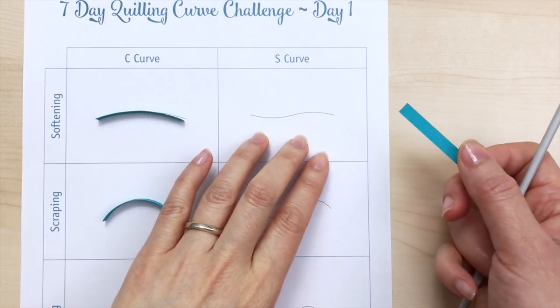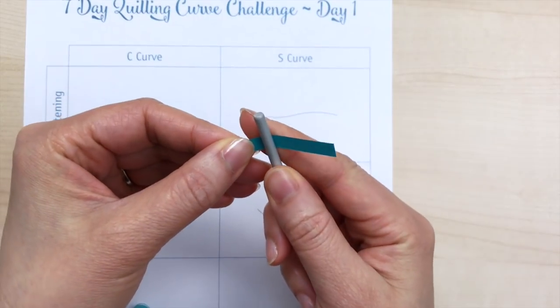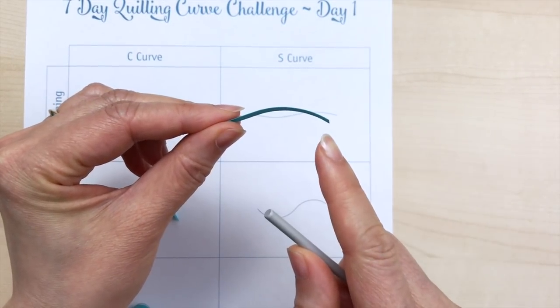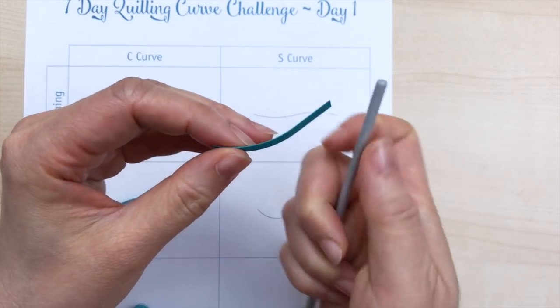Now for the S curve. Similar to the C curve, but you'll see after I've softened one side, now I'm going to flip this way to create the S curve.